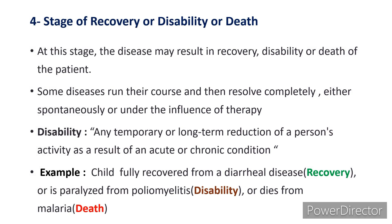Now coming to the last stage — stage of recovery, disability, or death. Looking at the natural course of any disease, the possible outcomes are recovery, disability, or death. Some diseases run their course and then resolve completely — that is recovery — either spontaneously or under the influence of therapy. Disability is any temporary or long-term reduction of a person's activity as a result of an acute or chronic condition. For example: a child fully recovered from a diarrheal disease is recovery; paralyzed from poliomyelitis is disability; or dies from malaria is death.